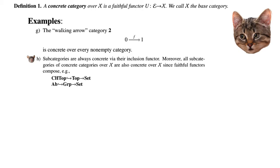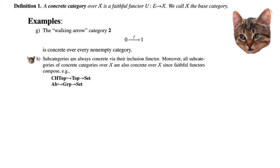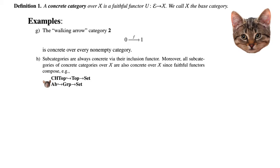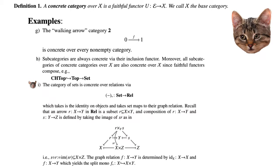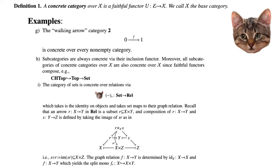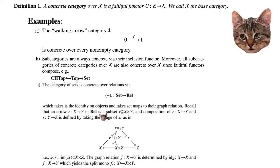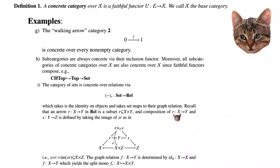Subcategories are always concrete via the inclusion functor. Moreover, all subcategories of concrete categories over X are also concrete over X, since faithful functors compose. For example, the category of compact Hausdorff topological spaces is a subcategory of topological spaces and is concrete over Set. The category of abelian groups is a subcategory of Grp and is also concrete over Set. We also have that the category of sets can be concrete over the category of relations via its graph-relation association.